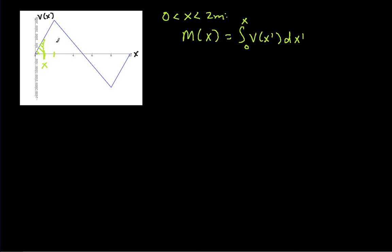Those of you that are handy with geometry can probably do it. I'm going to work the integral just to make sure it's clear what we need to do in more complex situations. So we have the integral from 0 to x. And between 0 and 2 meters, v(x) was 1000 newtons per meter times x' dx'.